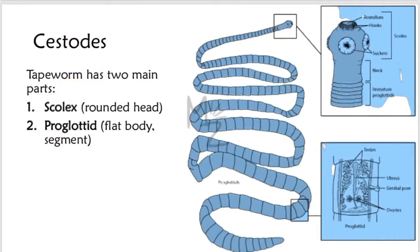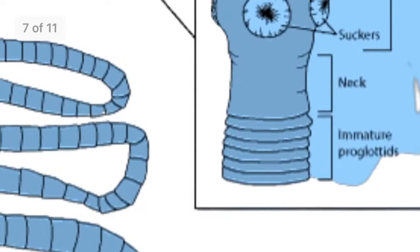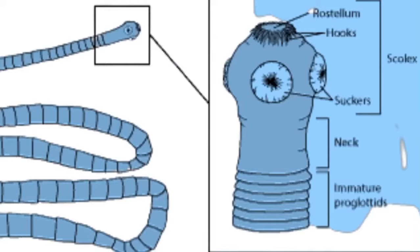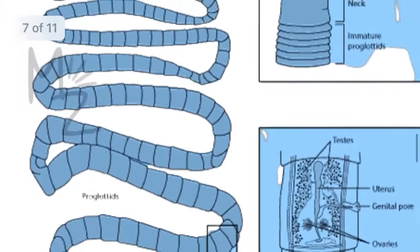Tapeworms consist of two main parts. A rounded head called a scolex. And a flat body consisting of multiple segments. Each segment is called a proglotid. In the picture you can see the scolex. Let me zoom in. This is the scolex. It has some hooks and some suckers. We are going to discuss them in detail a bit later. And these are the proglotids. The single segment is called a proglotid.